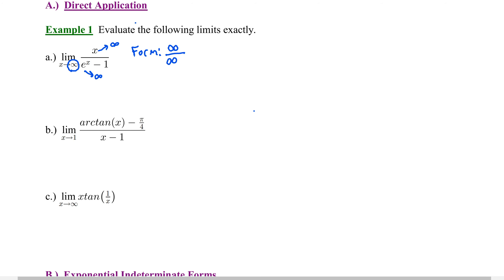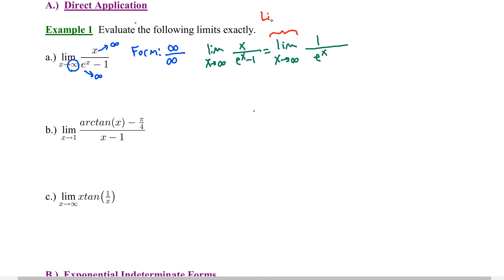I know it looks like it reads L'Hospital's rule, but we pronounce it L'Hôpital's rule. Once I discover that indeterminate form, I can individually find the derivative of the top and the bottom to calculate the limit. So we're going to find the limit as x approaches infinity. The derivative of the top is 1, and the derivative of the bottom is just e to the x. Note that the limit operator is what we call a pending operation—I'm going to carry it through my work until I actually evaluate the limit.